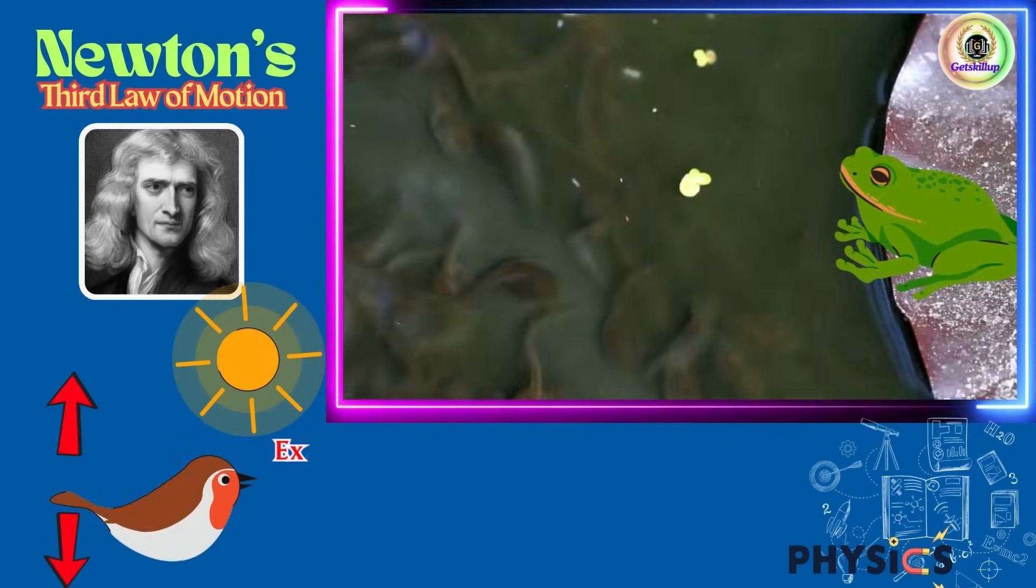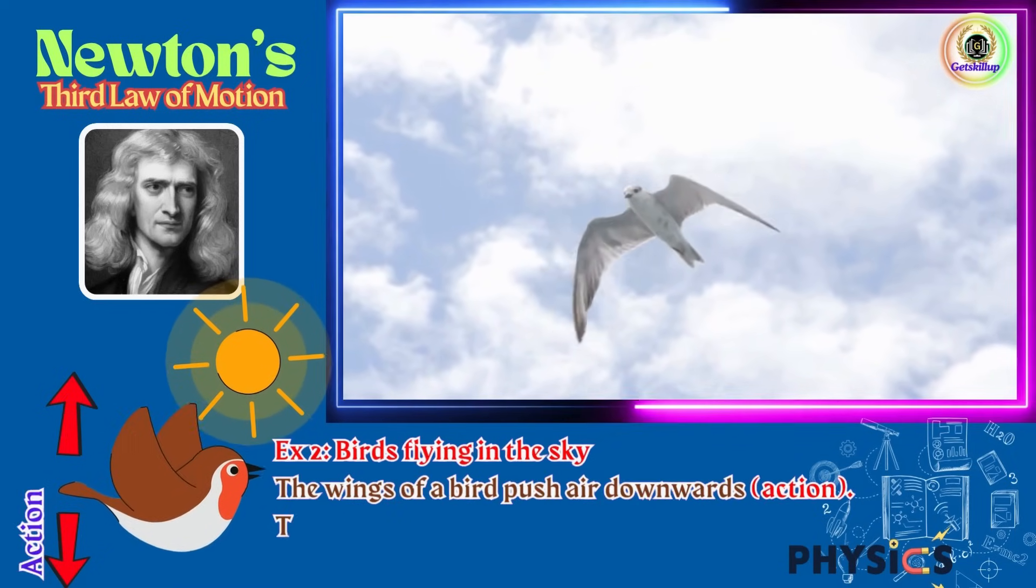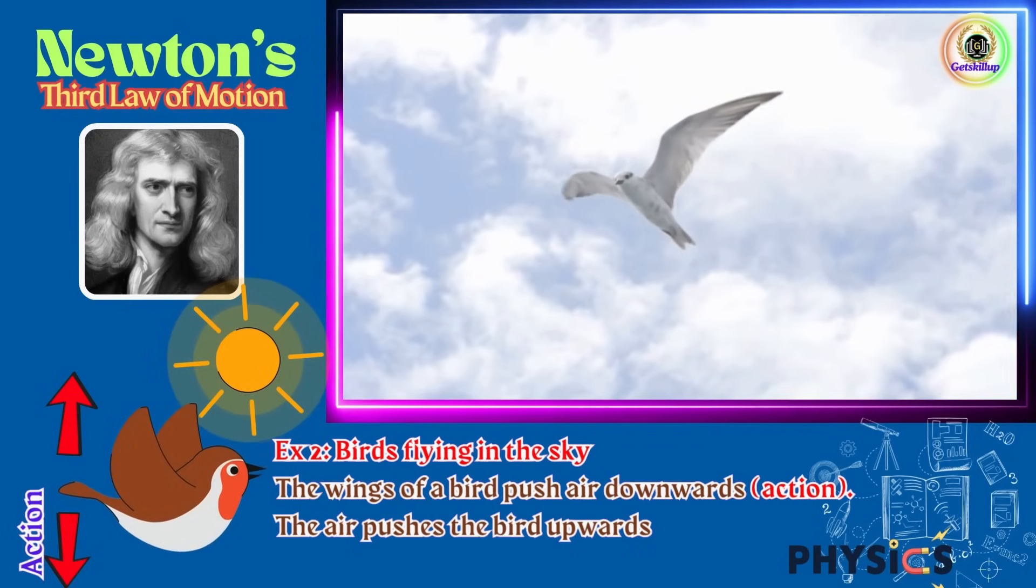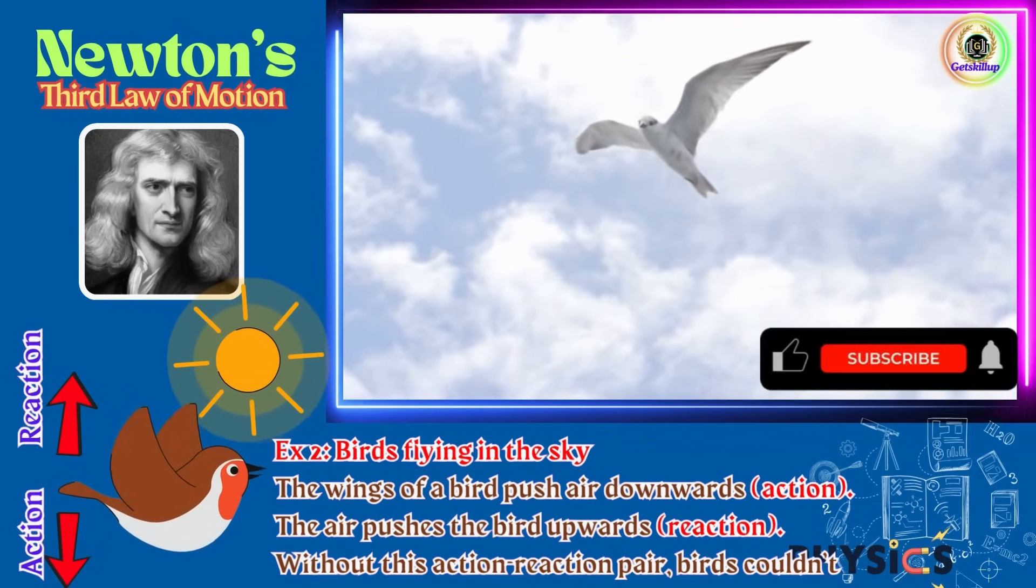Example 2: Birds flying in the sky. The wings of a bird push air downwards - action. The air pushes the bird upwards - reaction. Without this action-reaction pair, birds couldn't fly.